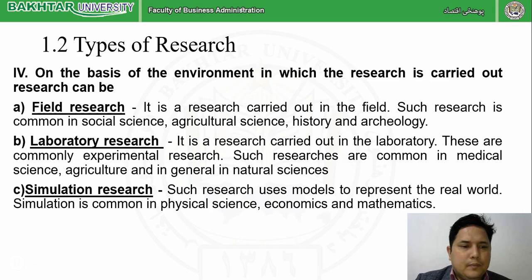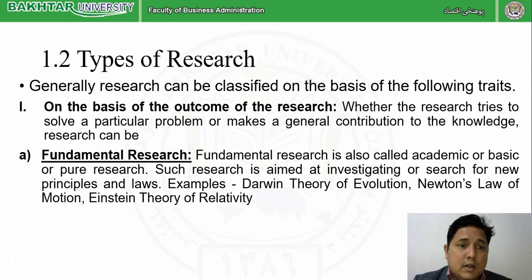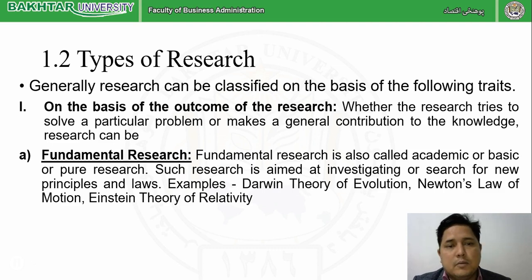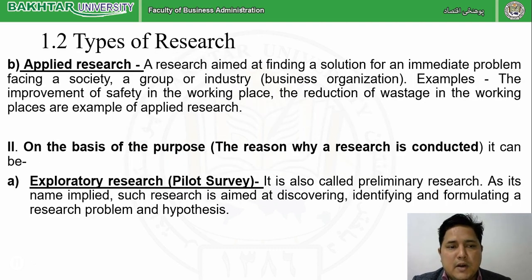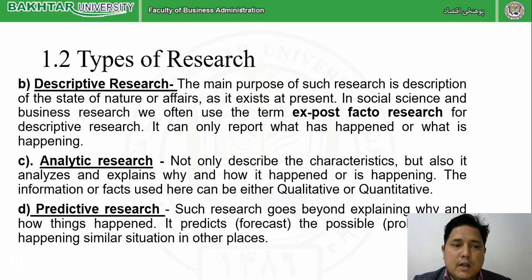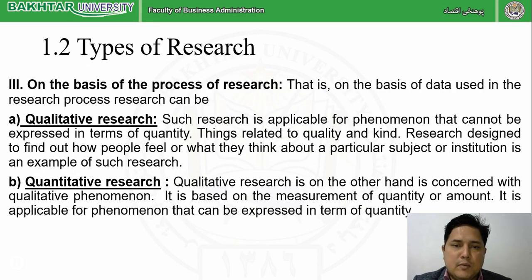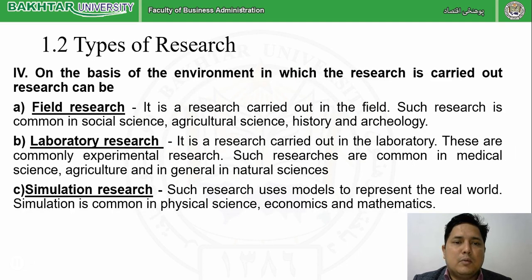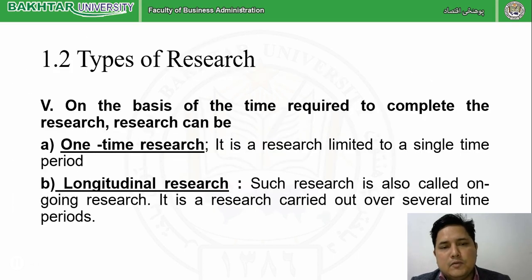If you count all types, there are 13 types of research in total, but what matters more is understanding the basis behind them: on the basis of outcome — fundamental and applied; on the basis of purpose — exploratory, descriptive, analytical (also called causal or explanatory), and predictive; on the basis of process — qualitative and quantitative; on the basis of environment — field, laboratory, and simulation; and on the basis of time — one-time and longitudinal research.